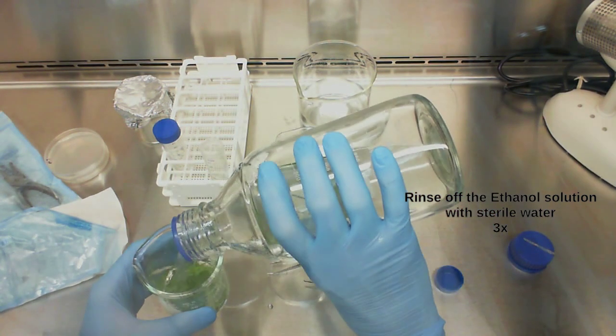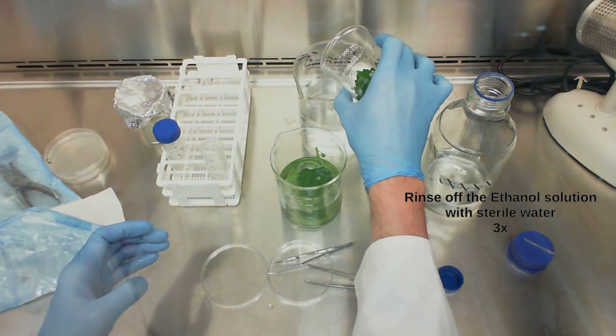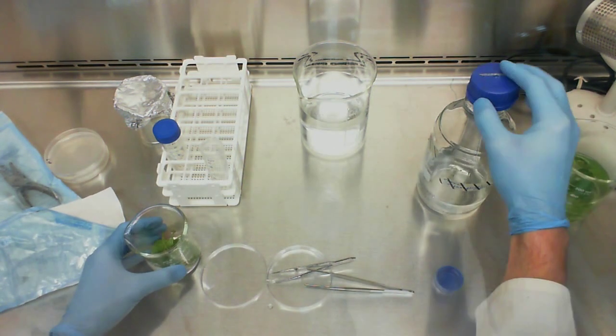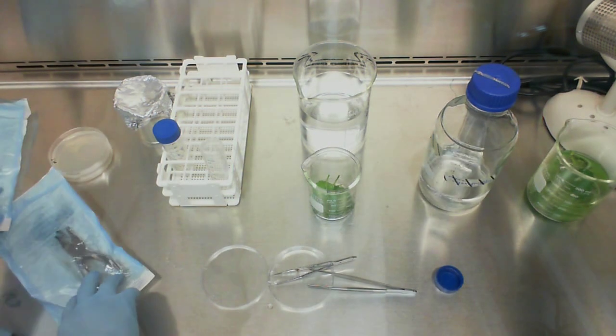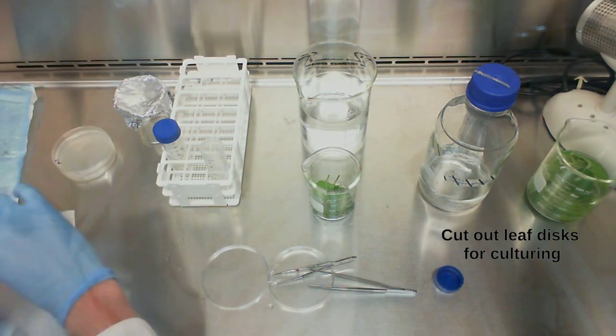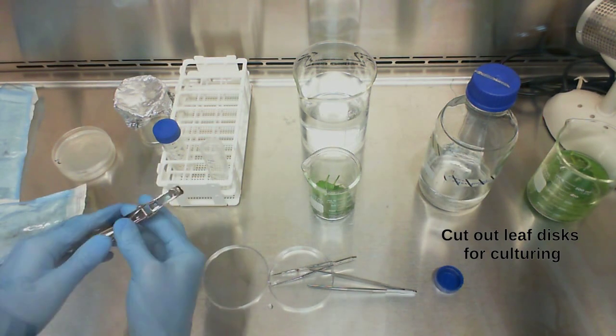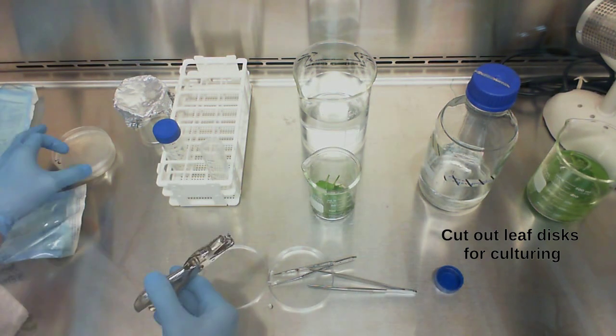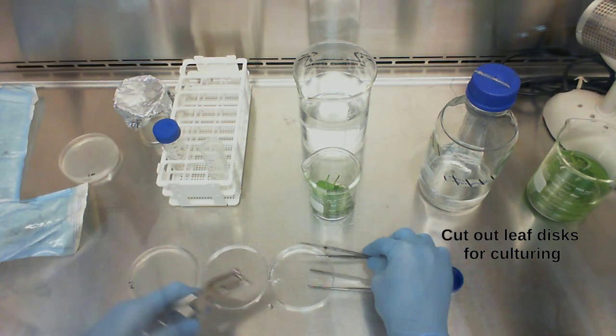Last wash. Now I have my forceps ready to go. I just need to take out my hole punch. This thing is going to allow me to make nice circular holes in my leaf, and I'll be able to generate a whole bunch of discs very quickly and easily. So here's my plate. Just free up a little bit of space here.